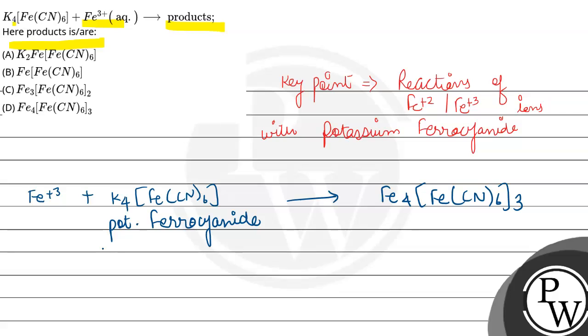So the product which we are obtaining here, it has a blue color, deep blue color basically, and it's called Prussian blue.